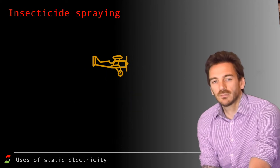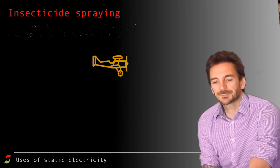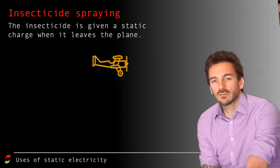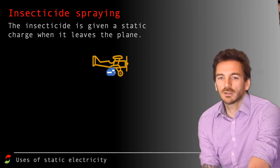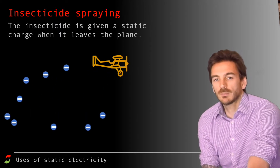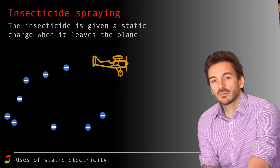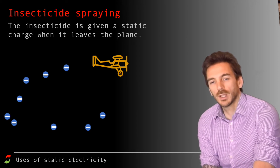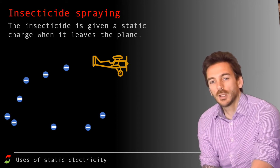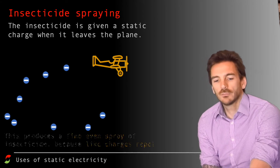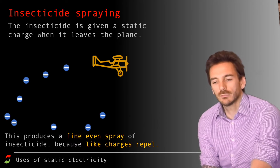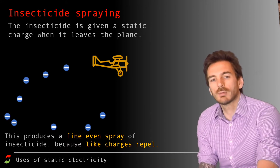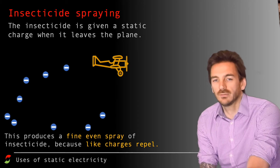Let's have a look at insecticide spraying, or crop spraying. The insecticide is given a static charge as it leaves the plane. Similar to electrostatic paint spraying, it's given a static charge to make sure you get a nice, fine, even spray and cloud of insecticide that falls out behind the airplane, so you cover a greater area of land with the insecticide.